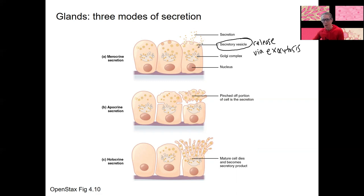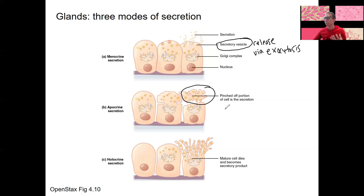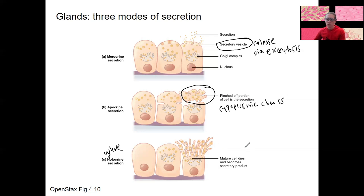Merocrine releases a lot at once, including things that can't pass through the plasma membrane, which is why it uses vesicular transport — an active transport process. Apocrine is when bits of the cell actually fall off: chunks of cytoplasm, surrounded by membrane, separate from the cell. Holocrine — I think of that as 'whole' — is when the whole cell eventually dies, the cell bursts, and its product is released.